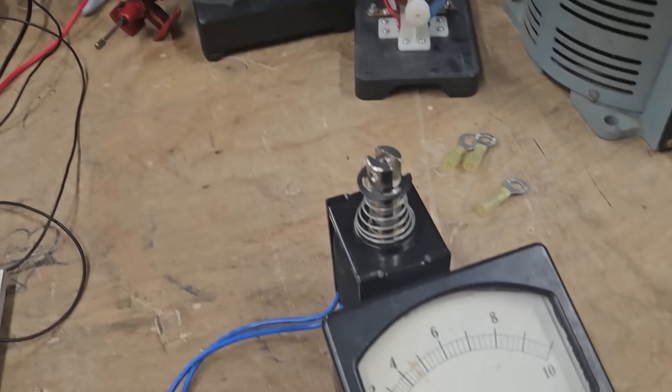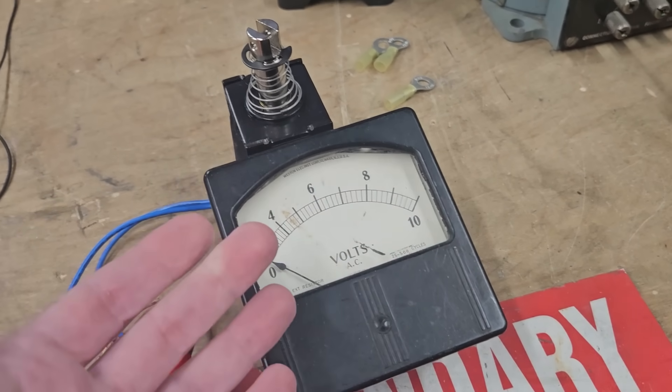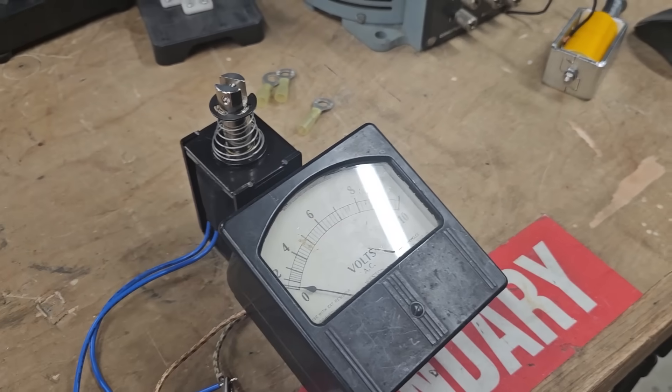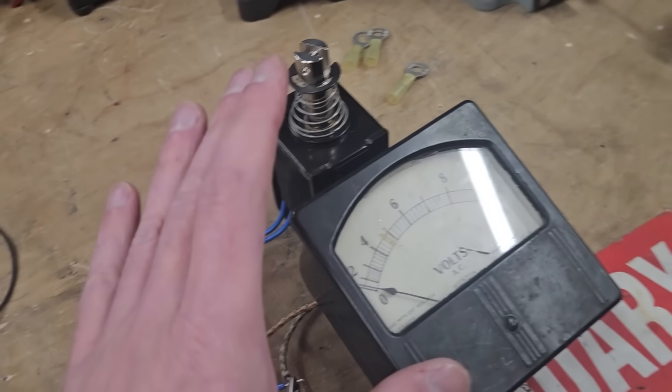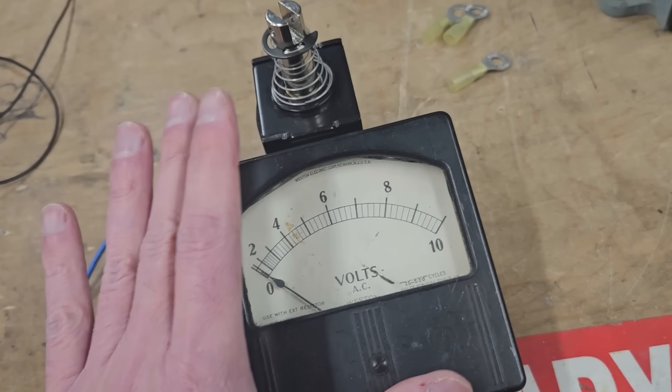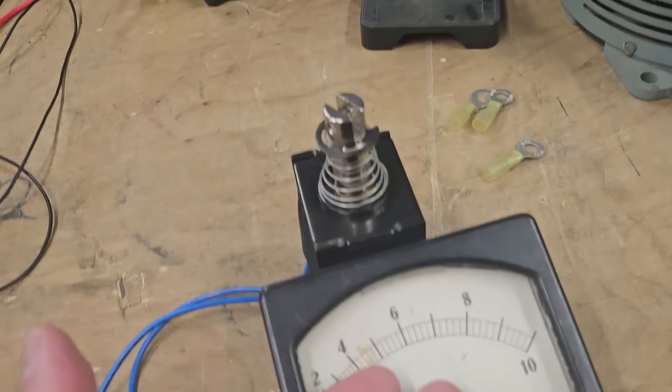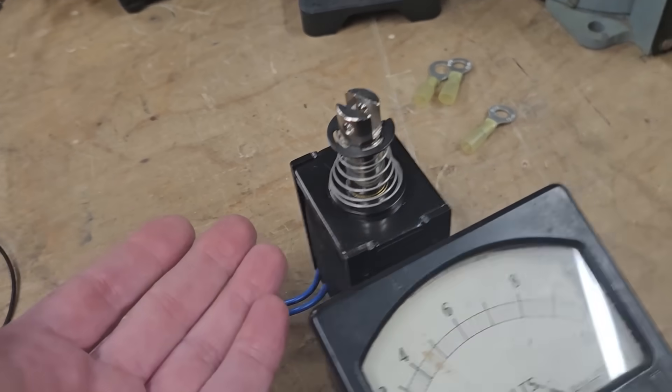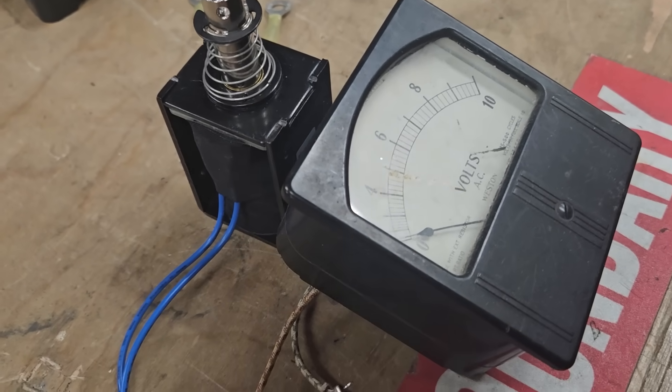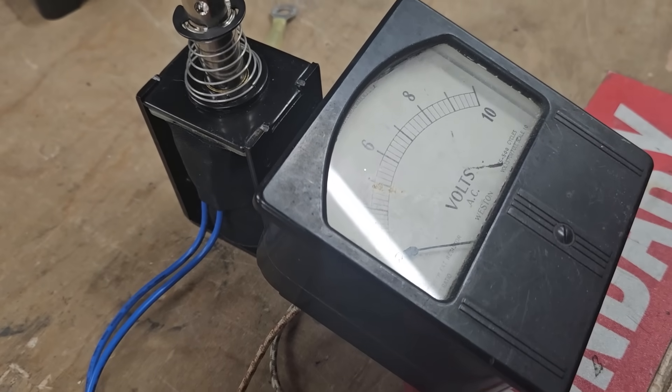Every now and then, I get lucky making these videos. Once in a great while, God smiles on you and it just works. So, just a power supply, an old analog meter, and a solenoid. That's all you need. You can do this at home. Hysteresis. Learn about it. It's cool science. And that's pretty cool.